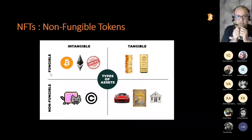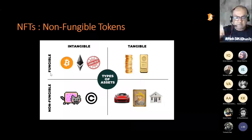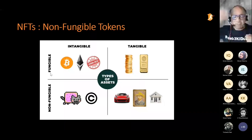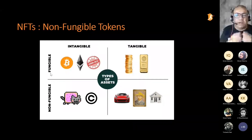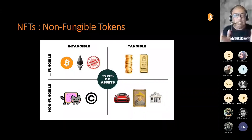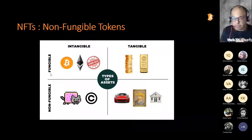Non-fungible, in the simplest form, is something which is not interchangeable. You cannot swap one house for another. Even in a building, a flat on the fifth floor is not interchangeable with a flat on the second floor — they have different characteristics and properties. Cars, despite being made by the same manufacturer, are not interchangeable. A painting is unique — it has its own properties. Once we understand fungibility and non-fungibility, it becomes easier to understand NFTs in depth.